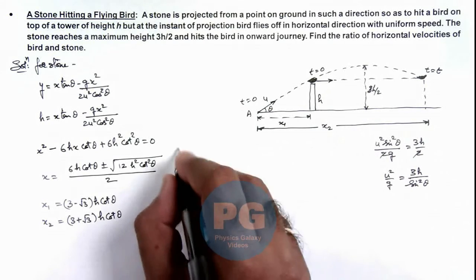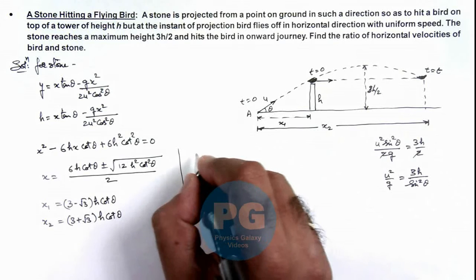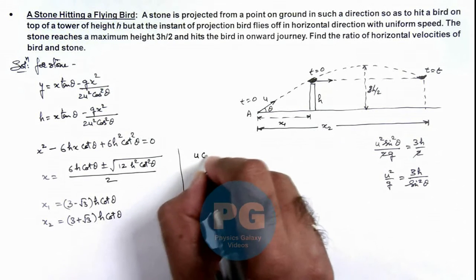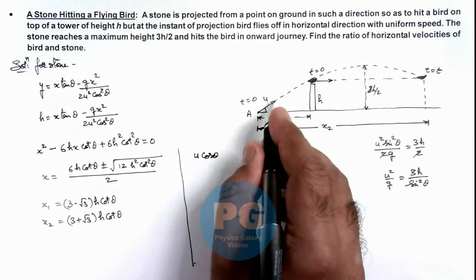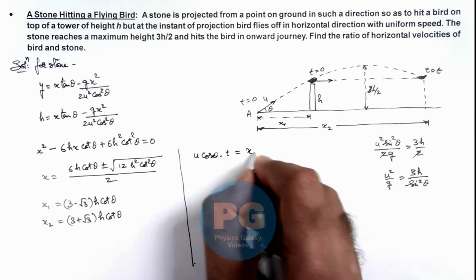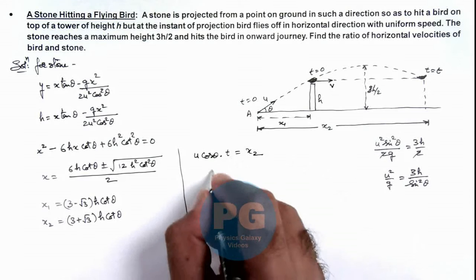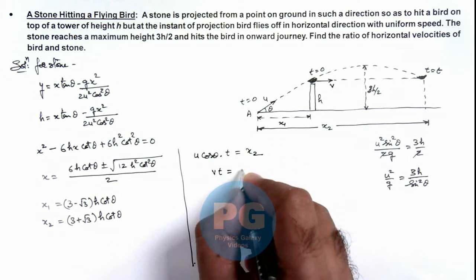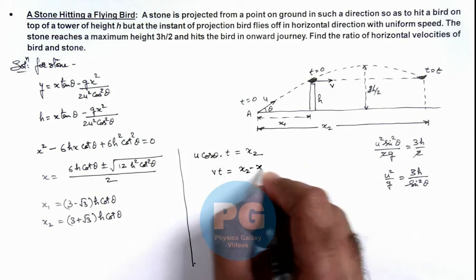In this situation, we can write the value of u·cos(theta), which is the stone velocity multiplied by time, should be equal to x₂. And if bird velocity is v, we can write v·t = x₂ - x₁.